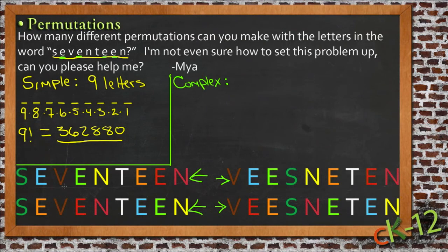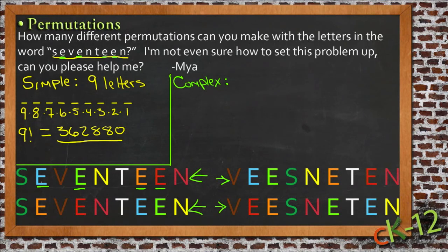Since 'seventeen' on top and 'seventeen' on the bottom are not different words, you may not want to count those as different permutations — even though the letters may be different letters, the word is the same. To account for this, you need to figure out how many different ways each word could be written. For instance, with 'seventeen' I have four positions to put e's in, so for the first e position I have four possible choices. For the second position I have three choices left, for the third I have two choices.